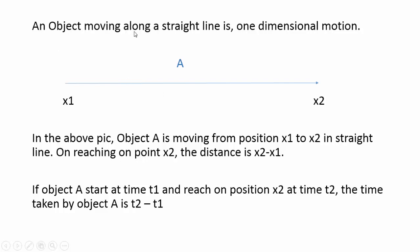An object moving along a straight line is one dimensional motion. So x1 is the starting position, x2 is the end position in the straight line. Suppose there is a position on the road x1 and x2, the object covers from x1 to x2. This is single line, one dimensional motion.